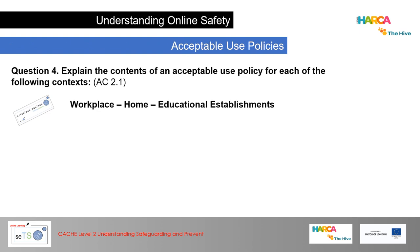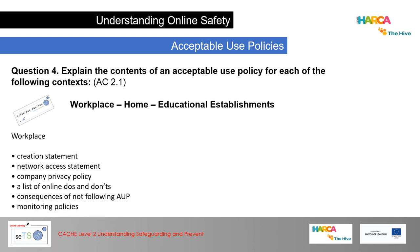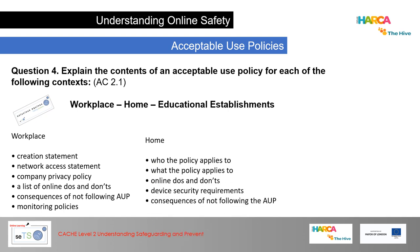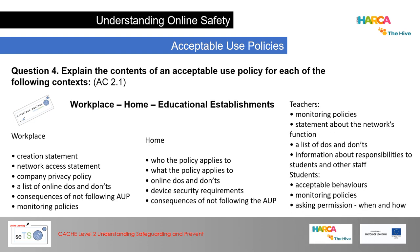Question 4 asks you to explain the contents of an acceptable use policy for three contexts. For the workplace: the creation statement, network access statement, company privacy policy and so forth. For the home: who the policy applies to, what it applies to, online dos and don'ts. For educational establishments: monitoring policies, a statement about the network's function, and a list of dos and don'ts. Remember — 'explain' requires detail; do not just list bullet points. I want these expanded with key features and how they work.